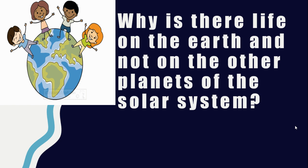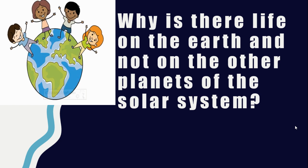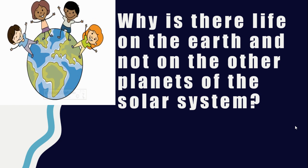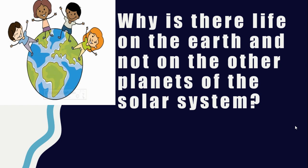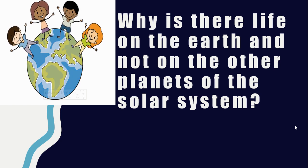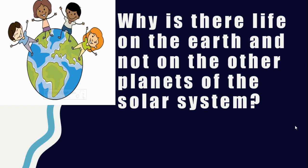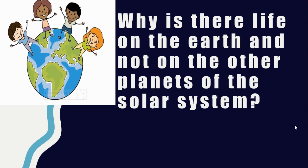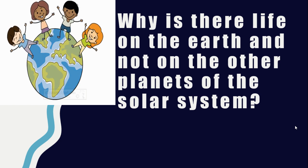Do you know, children, why there is life on the Earth and not on the other planets of the solar system? In the beginning, the Earth was very hot. Slowly it cooled down and a layer of air formed around it. Clouds in the air brought rain, which formed oceans and lakes. Now the Earth had air, water, and soil. It received sunlight, which plants need to make food. Gradually, living beings appeared and developed to what they are today.